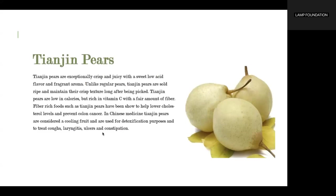Pears have long been regarded as a beneficial fruit in TCM for moistening the lungs and stomach, as well as clearing heat and transforming phlegm. Ancient texts recommend pears for treating symptoms like dry cough with little phlegm, dry throat, and hoarseness. Fresh pear juice with honey is excellent for moisturizing the throat, while a stewed pear dish with rock sugar and fritillaria can effectively alleviate coughs and promote throat health.